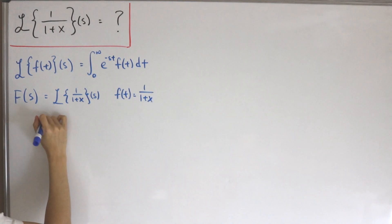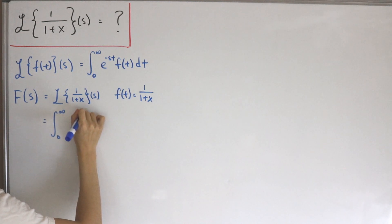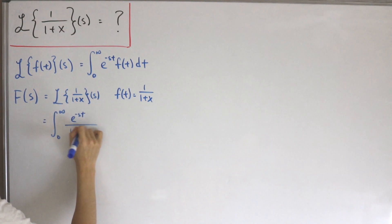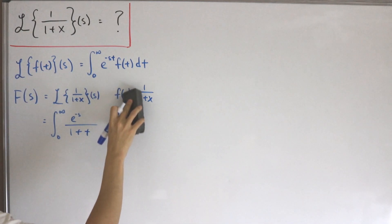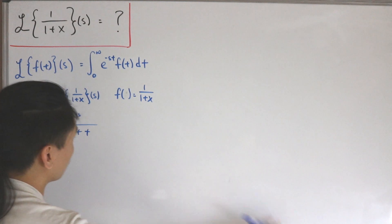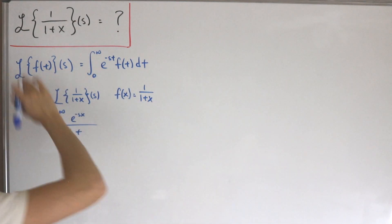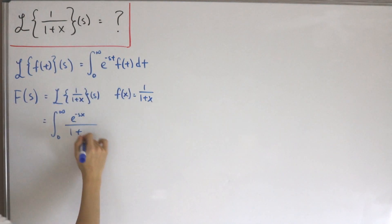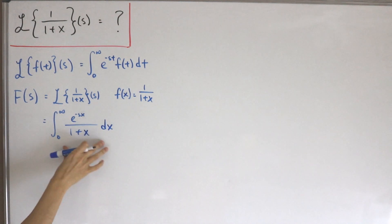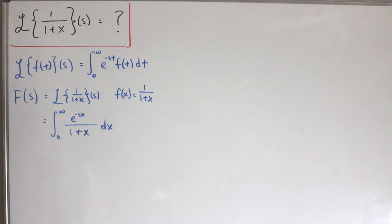What we actually want to calculate is the integral from zero to infinity of e to the negative s times x, divided by one plus x, then dx. Note that t is just the standard naming convention; here we're using x instead. This integral doesn't look as easy as it appears — finding a simple elementary antiderivative isn't straightforward.